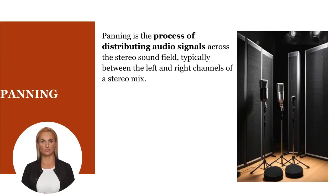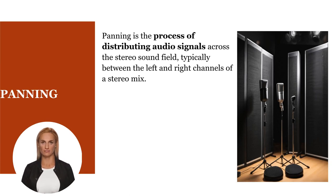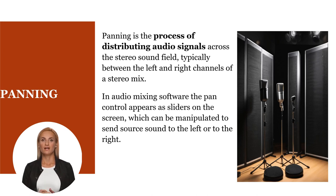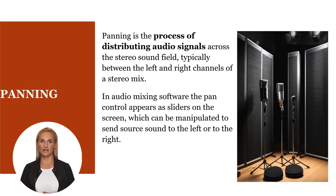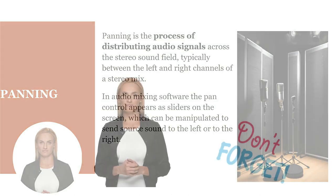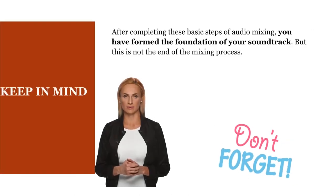Panning is the process of distributing audio signals across the stereo sound field, typically between the left and right channels of a stereo mix. Traditional recording devices had a pan control for every source channel. In audio mixing software, the pan control appears as sliders on the screen which can be manipulated to send source sound to the left or the right. By adjusting the panning position of individual audio tracks, you can create spatial separation, width, and balance that will make your soundtrack rich and immersive.